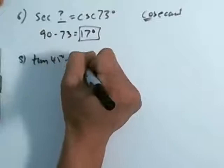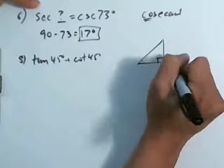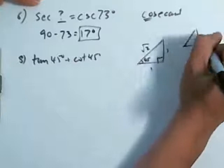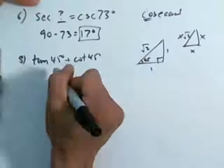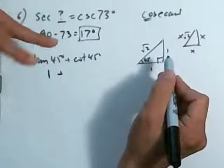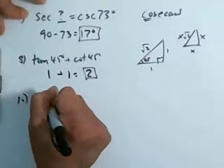Number 8: I want the tangent of 45 degrees plus the cotangent of 45 degrees, and I want to figure out what that is. I'm going to draw a right triangle — 1, 1, root 2. It doesn't matter as long as you use 45-45-90. On the 45-45-90, it's x, x, x root 2. So the tangent of 45 is opposite over adjacent, which is 1. Plus the cotangent — it's the reciprocal function, so instead of opposite over adjacent, it's adjacent over opposite, which is still 1. So the answer equals 2.